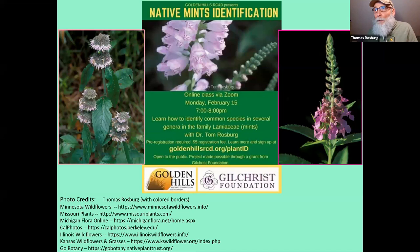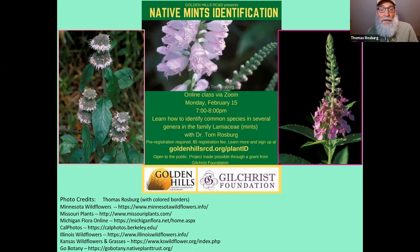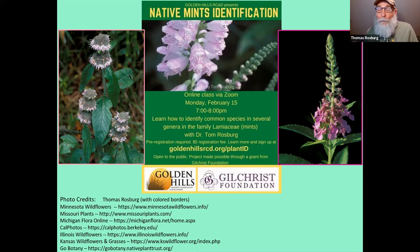As a group they're pretty easy to recognize to the family level. There are about 236 genera in the Lamiaceae and over 7,000 species according to the angiosperm phylogeny working group. In Iowa, Eilers and Rosa lists 24 genera and 53 species.